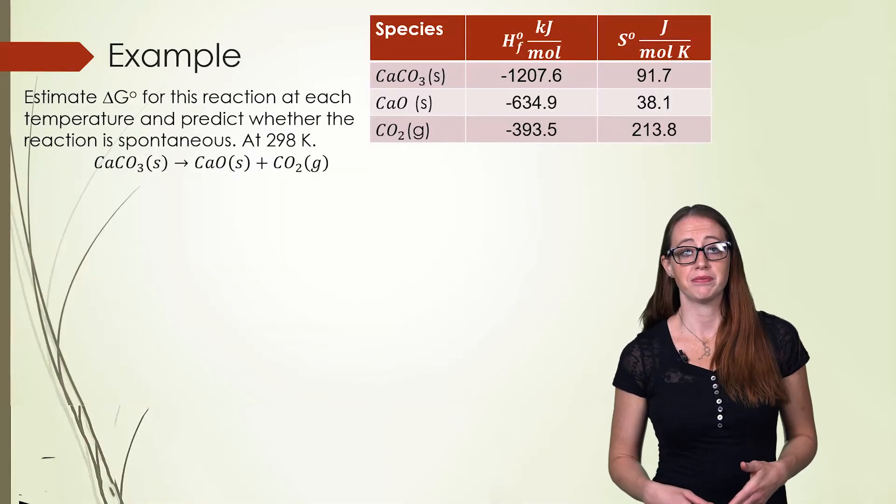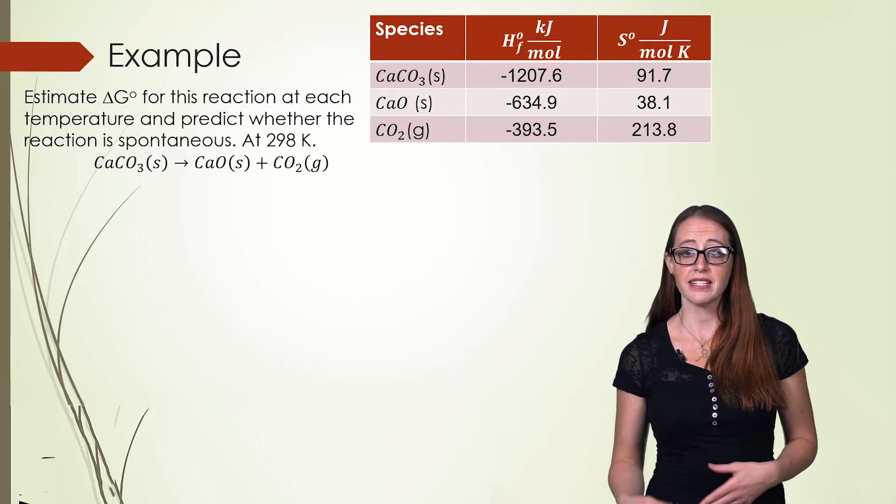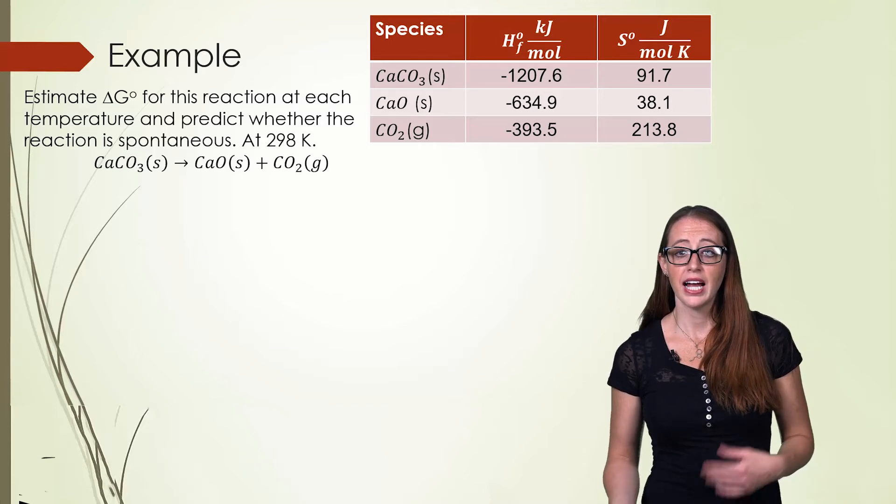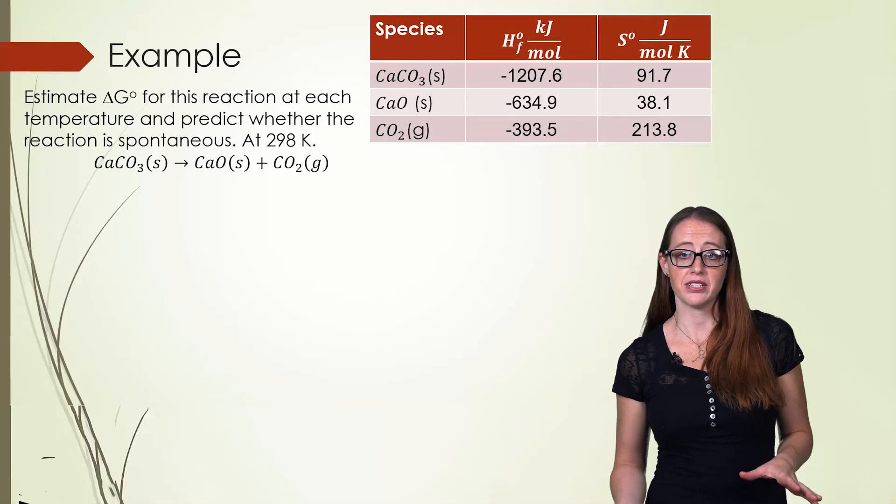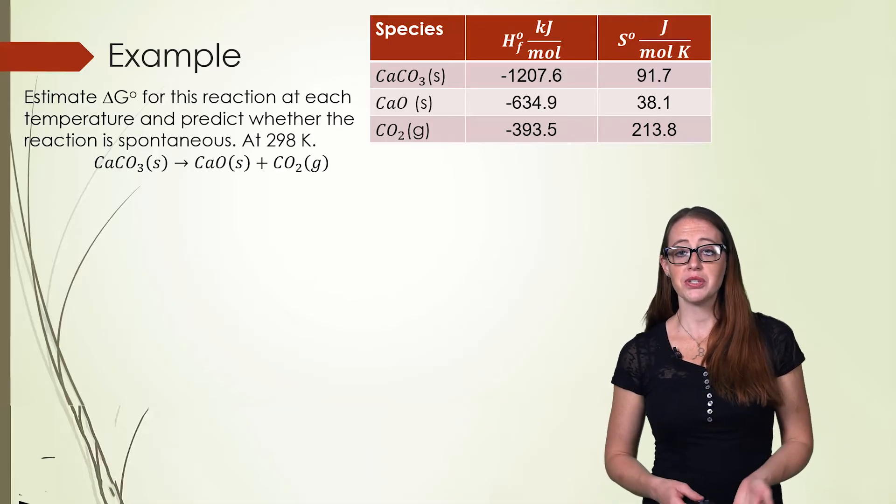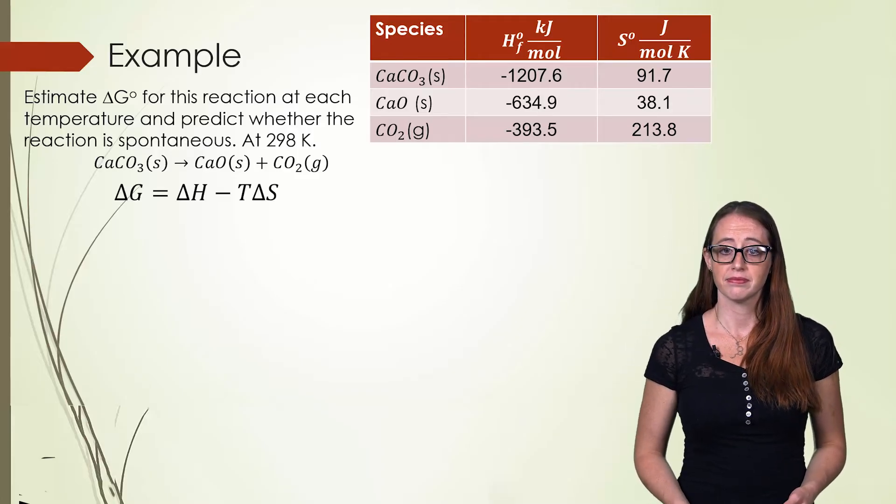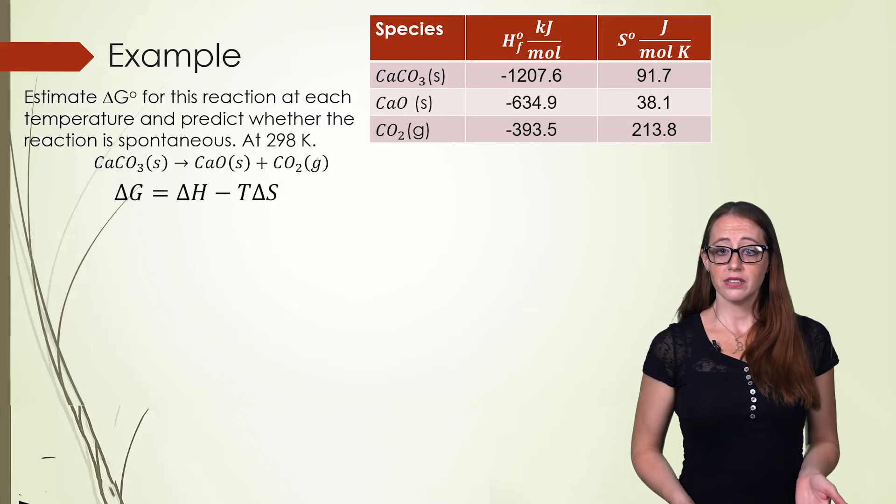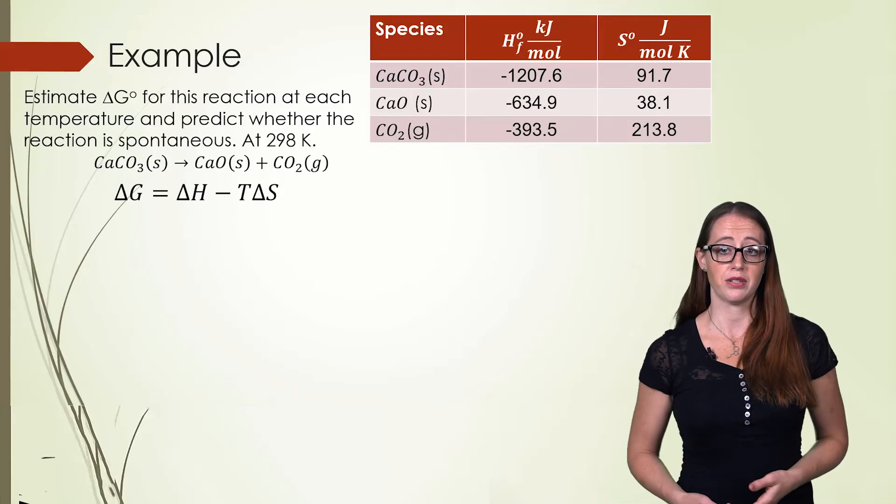So let's do a problem now. Here I ask you to calculate delta G based on the information given. I give you the enthalpy and the entropy values. I don't give you the delta G values. So you need to use the equation that I introduced in this video to calculate it. Then you need to calculate the ΔH and the ΔS to fill into this equation.